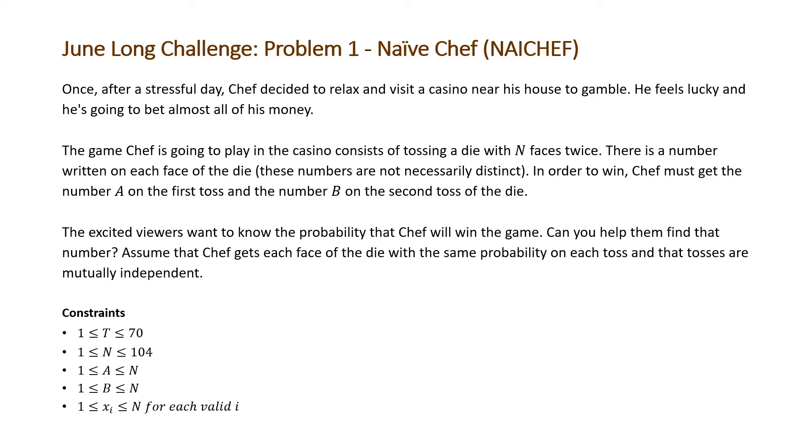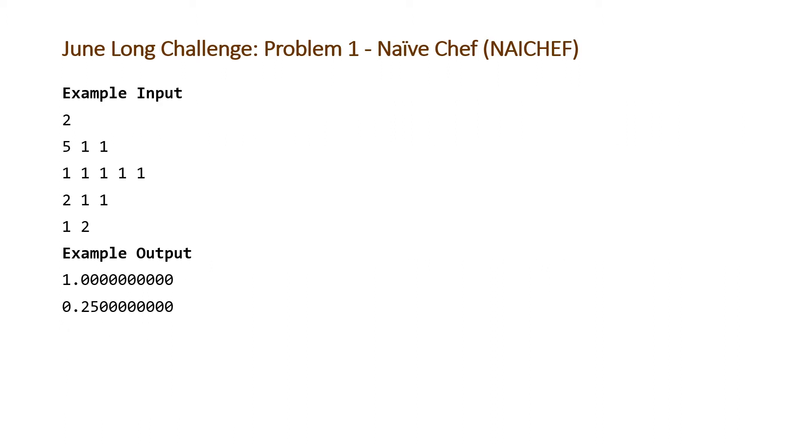So let's take a look at the examples that Code Chef provided us with. So here is our example input and our example output. So note that the first number here just represents T, the number of test cases, and then each test case consists of two lines. The first line consists N, A, and B. So this is the number of faces on the die. And A is the number we want to get on our first roll and B is the number we want to get on our second roll. And then the second line in our test case just consists of the values on each one of the faces of our die.